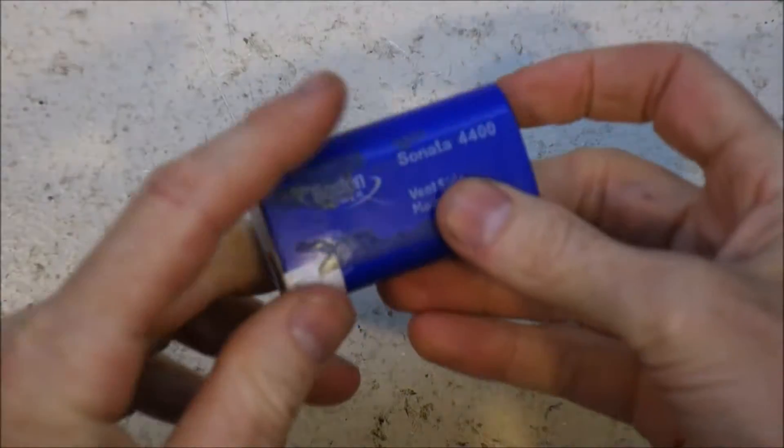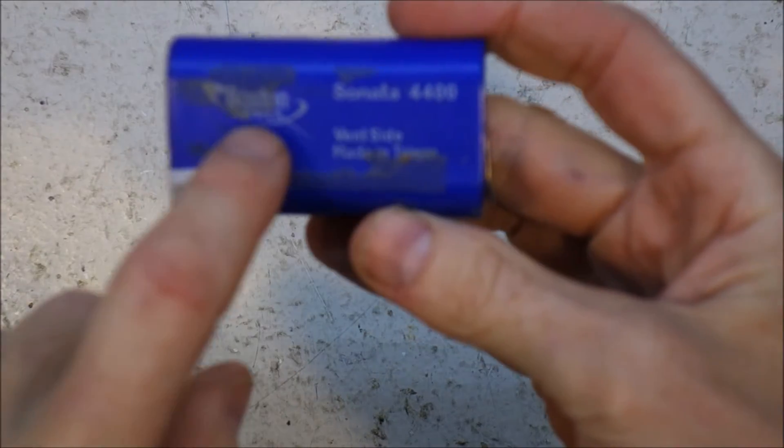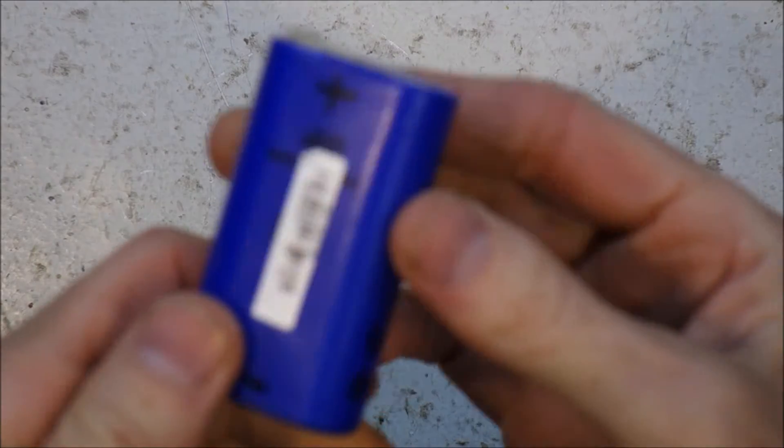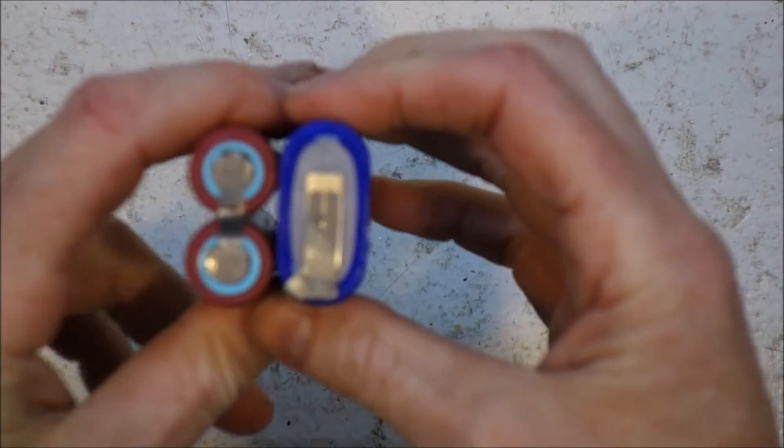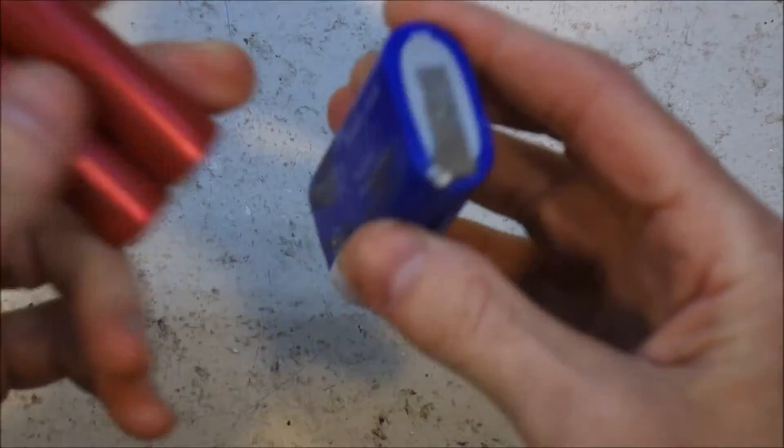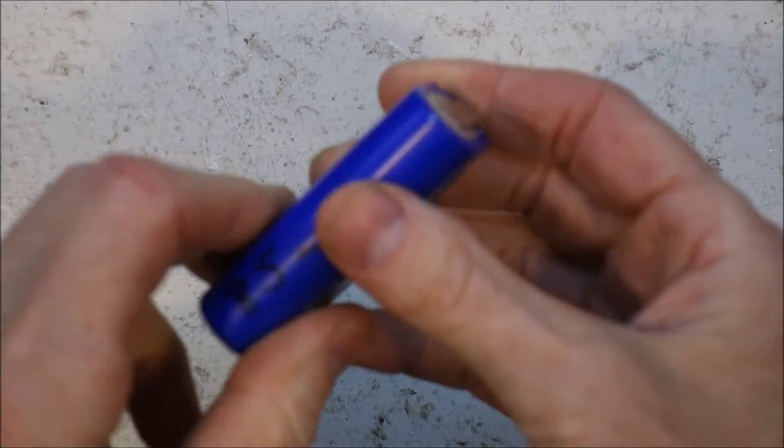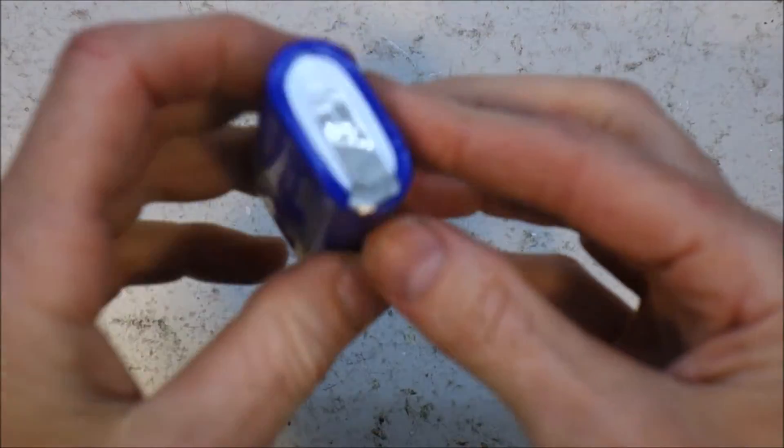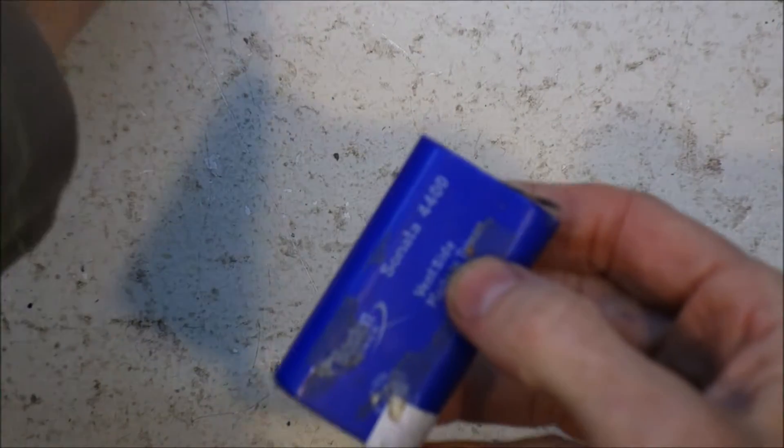One of the weird ones was these things here, which are the Boston Power Sonata 4400 prismatic cells. They are exactly the same size and shape as two 18650s, but they're not a pair of 18650s wrapped in a package. They are actually manufactured as a single cell, but it just happens to be the same shape as a pair of 18650s. That's weird.